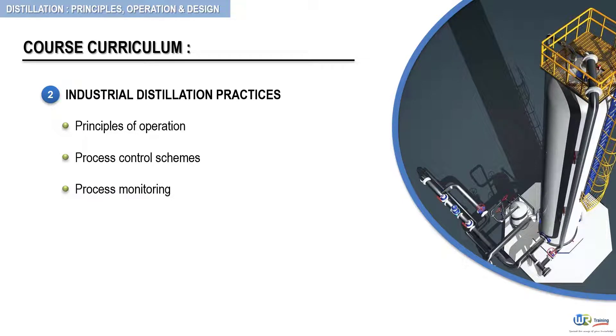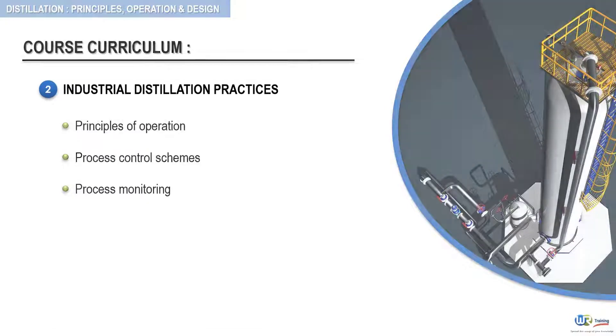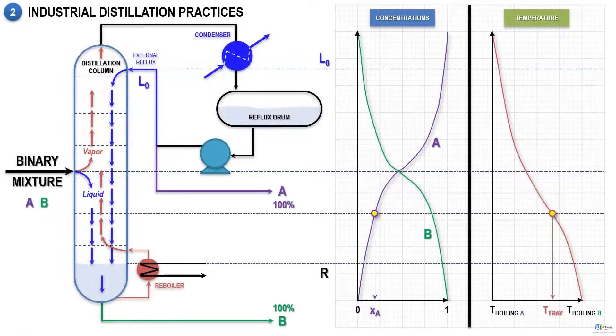We will have a closer look at the operating parameters of an industrial distilling column, such as pressure, temperature, flow rate, component concentrations, and their corresponding profiles through the column.